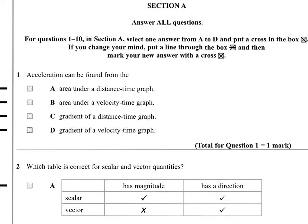Acceleration can be found from one of these quantities. This is just straight book work. Acceleration can be found from the gradient of a velocity time graph.